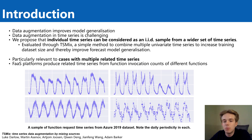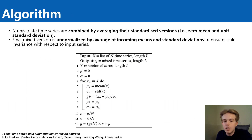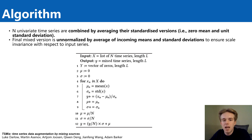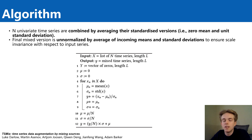And this also makes sense purely from a cloud perspective since functions may invoke other functions. The algorithm of TSMix is straightforward. N univariate time series are combined by averaging their standardized versions. The final mixed version is then unnormalized by the average of incoming means and standard deviations to ensure scale invariance with respect to the input series.